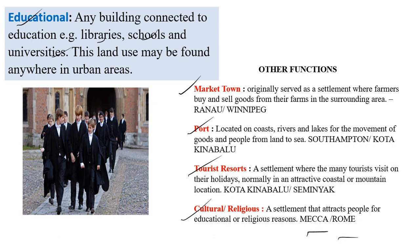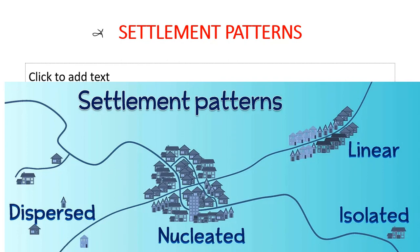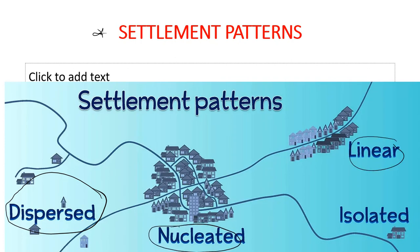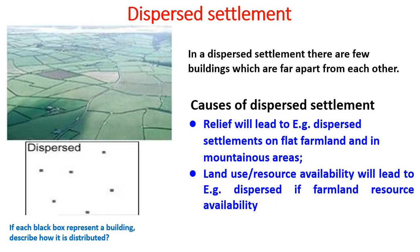Now let's look at settlement patterns — how a settlement is arranged. There are three major patterns your syllabus requires: dispersed, nucleated, and linear. In a dispersed settlement there are few buildings which are far apart from each other, as we can see in the diagram. The causes of dispersed settlement include relief — such as mountainous regions — and land use and resource availability.